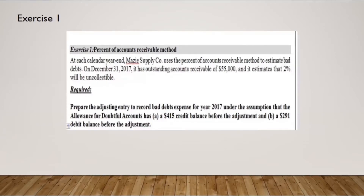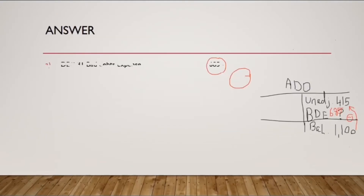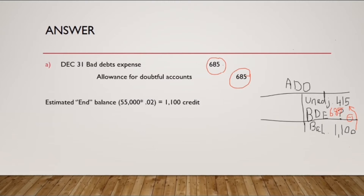Exercise one: percent of accounts receivable method. At each calendar year end, Masi Supply Corporation uses the percent of accounts receivable method to estimate bad debts. On December 31, 2017, it has outstanding accounts receivable of $55,000, and it is estimated that 2% will be uncollectible. We need to prepare the adjusting entry to record bad debt expense for 2017 under two assumptions: first, the allowance for doubtful accounts has a $415 credit balance before adjustment; second, it has a $291 debit balance before adjustment.